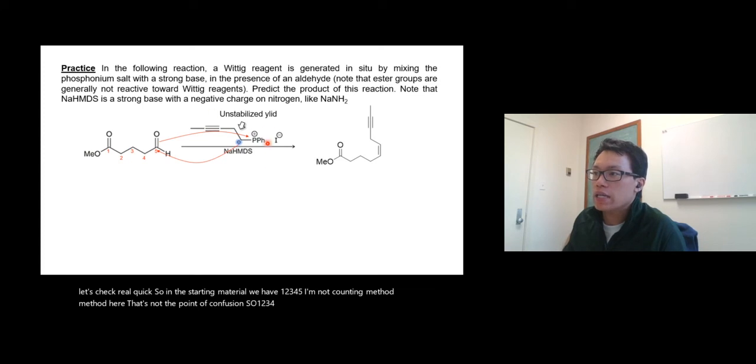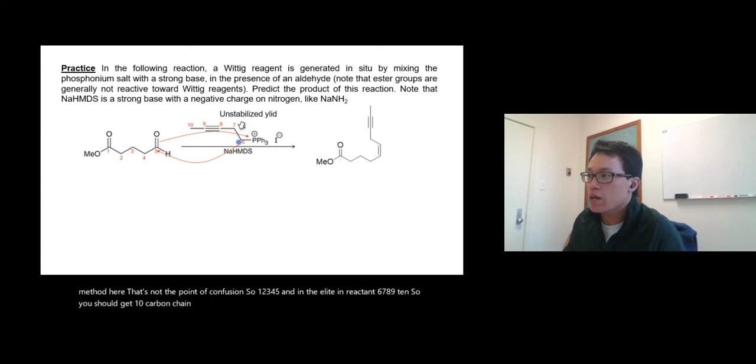So one, two, three, four, five, and in the ylide, in the reactant, six, seven, eight, nine, ten. So you should get 10 carbon chain. Let's count on the product: one, two, three, four, five, six, seven, eight, nine, and ten. Here we go, that's good.